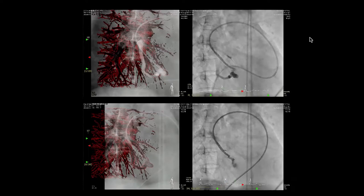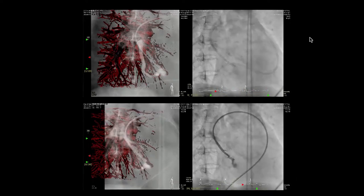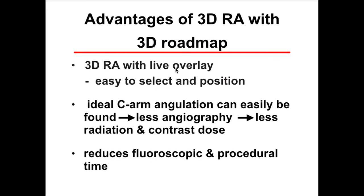I can select this branch easily with the roadmap, measure, and close it with the M++ plug successfully. The advantage of the 3D rotational angiogram with 3D roadmap is that we can easily select the vessel we want, easily position the balloon, stent, or device. The ideal camera angle can be easily found, meaning we don't need additional angiograms. So: less angiography, less radiation, less contrast dose, and reduced fluoroscopic time and procedural time.